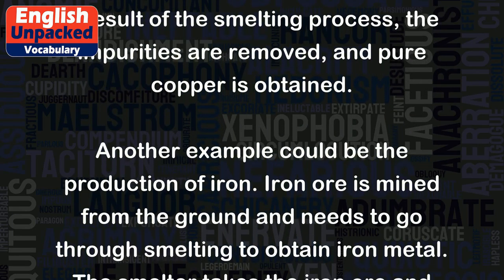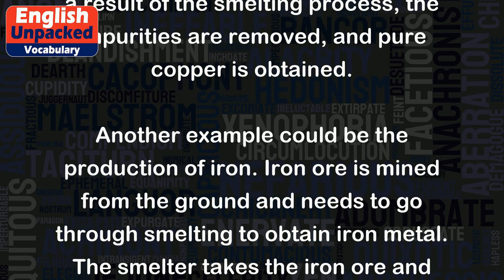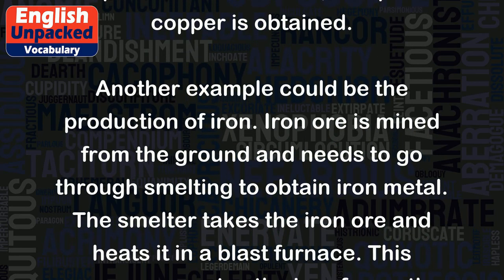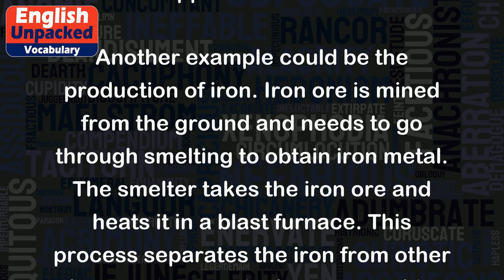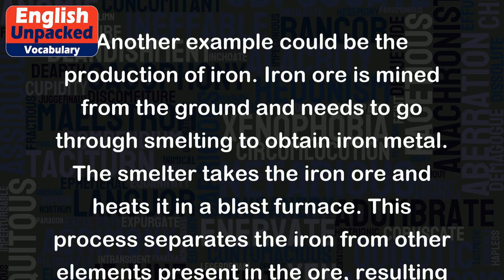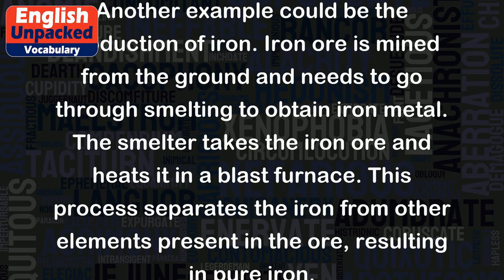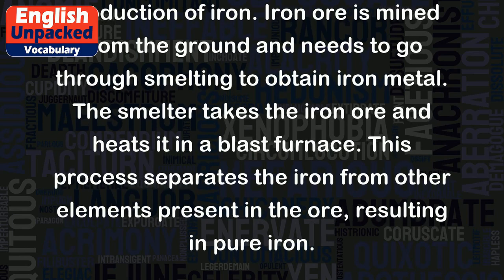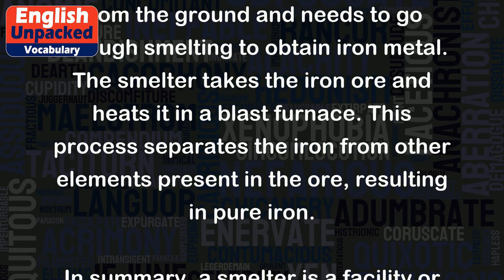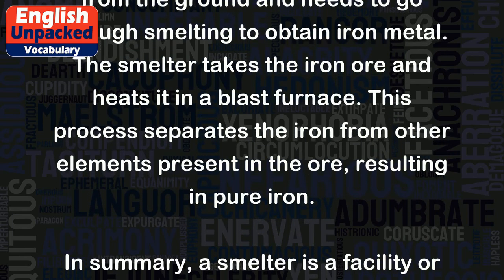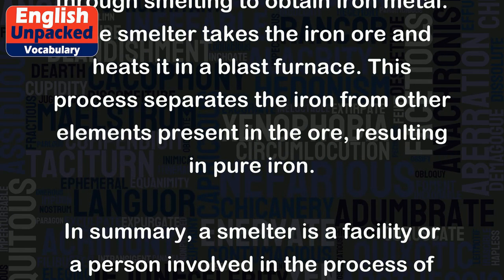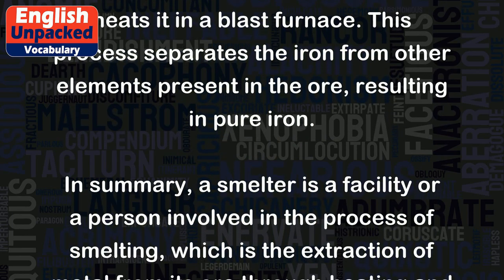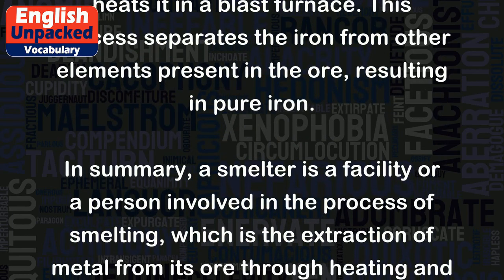Another example could be the production of iron. Iron ore is mined from the ground and needs to go through smelting to obtain iron metal. The smelter takes the iron ore and heats it in a blast furnace. This process separates the iron from other elements present in the ore, resulting in pure iron.